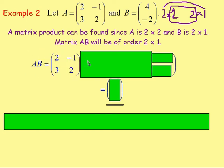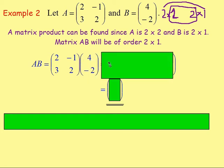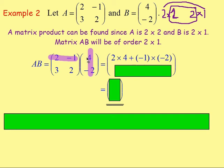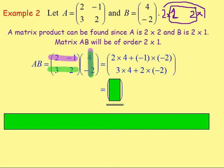So AB can be found. Matrix A is [2, -1; 3, 2] beside matrix B [4; -2]. The result is a 2 by 1 matrix, with 2 rows and 1 column. For the entry in the first row and first column, multiply the first row by the first column: 2 times 4, add (-1) times (-2). For the entry in the second row and first column, multiply the second row by the first column: 3 times 4, add 2 times (-2). Working that out gives [10; 8]. Just double-check that this matrix is of order 2 by 1 — which it is.